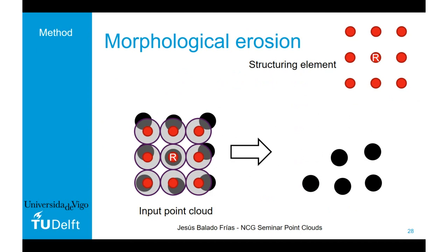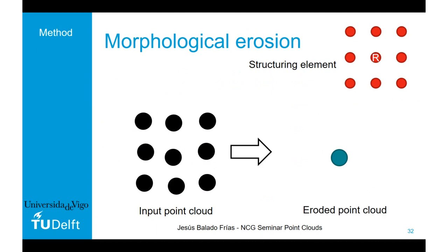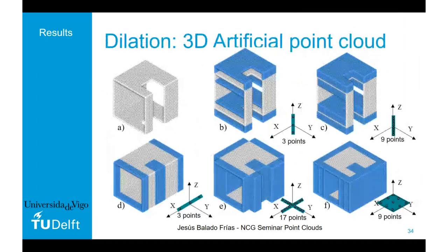For morphological erosion: first we duplicate the input point cloud — one copy for analysis, one to erode. We translate the structuring element to each point, check coincidences against a threshold, and if structuring element points don't match we eliminate the corresponding input point. At the central point, if all structuring element points match, the point is conserved; otherwise it is eliminated. For implementation we used one 3D artificially generated point cloud, one from the Stanford dataset, and point clouds acquired in real environments.